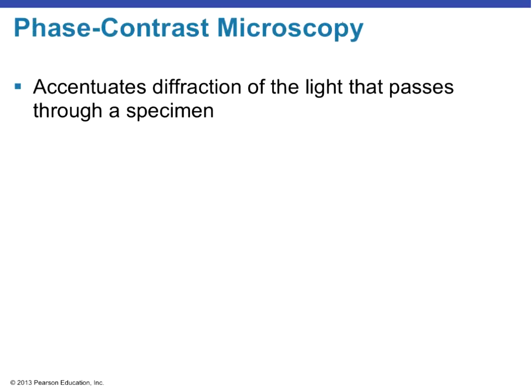Phase contrast microscopy accentuates the diffraction of light that passes through the specimen. Instead of just seeing the outside as with bright field and dark field illumination, with phase contrast microscopy we're actually able to see through the inside of the specimen.